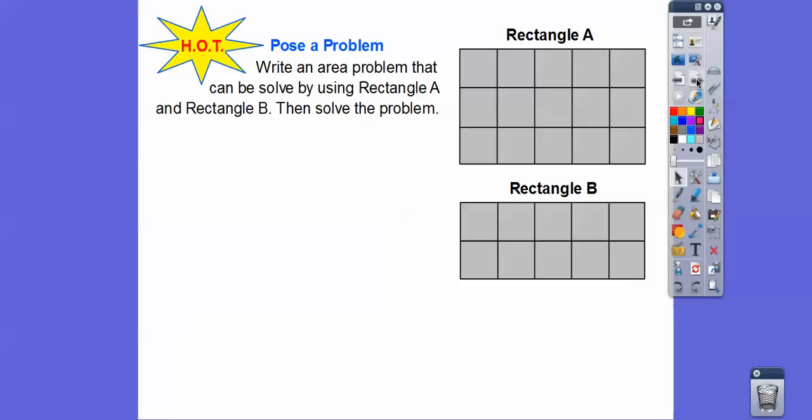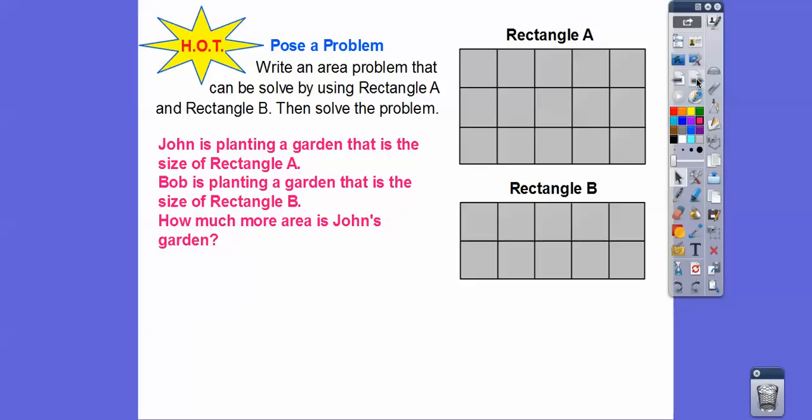So write an area problem that can be solved using rectangle A and rectangle B, and then solve the problem. So somehow we've got to do this area and relate this area. So I talked about square feet in a garden right here. So John is planning a garden that has the size of rectangle A. I don't even think I said square feet. So Bob could be square yards, could be square anything. So Bob is planning a garden that is the size of rectangle B. So how much more area is John's garden than Bob's garden? So we've got to count up the squares in John's garden. So here's John right here. So there's five here plus five plus five is 15.